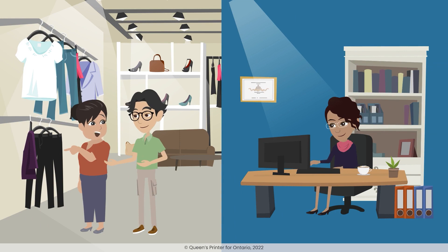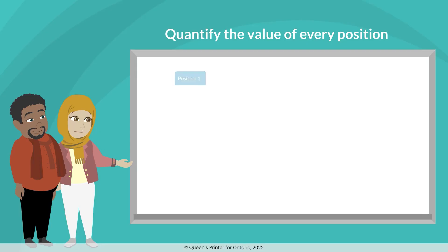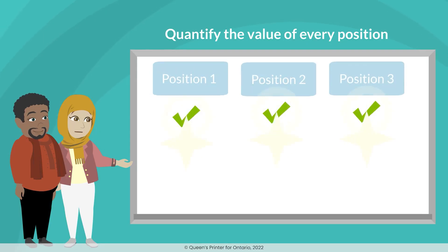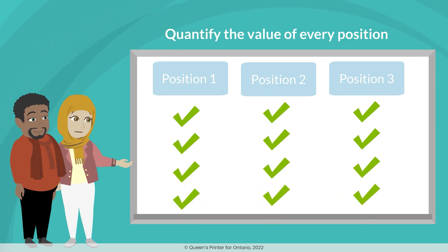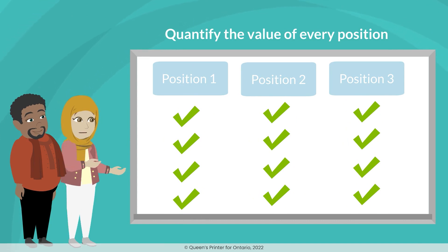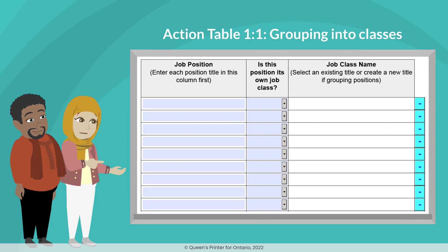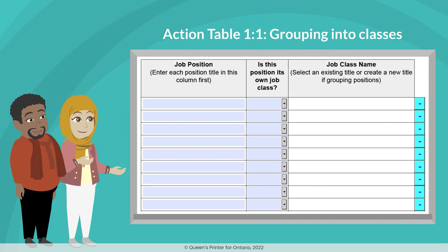To make sure that we do this in an unbiased way, we need to carefully quantify the value of every position and then compare similarly valued positions to ensure that they are compensated equitably. That careful quantification process starts with looking at all of the positions and deciding whether and which ones should be grouped together into classes.